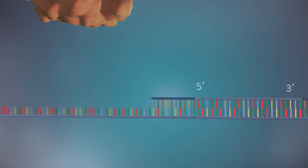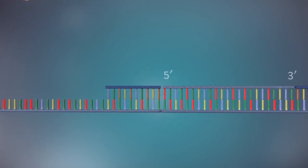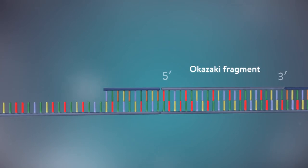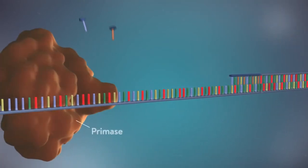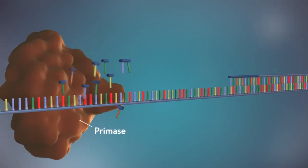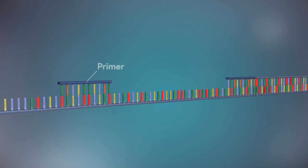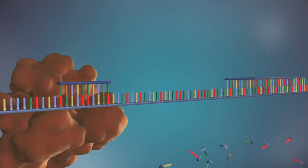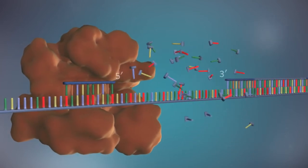The DNA polymerase can therefore only make this strand in a series of small chunks called Okazaki fragments. Each fragment is started with an RNA primer. DNA polymerase then adds a short row of DNA bases in the five prime to three prime direction.